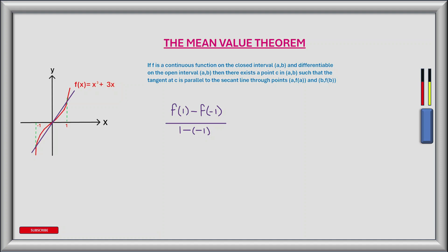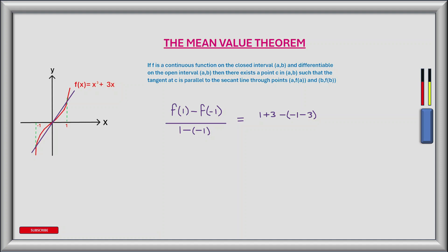So let's first find the average rate of change — that's the gradient of the secant line between the intervals — which is given by the difference between the end points on the y-axis divided by the difference in the end points on the x-axis. If we put 1 into the function we get 1 plus 3, then we subtract what we get when we put minus 1 into the function, which gives minus 3 minus 3, and we divide by 1 minus minus 1. This evaluates to 4 plus 4 divided by 1 plus 1, which is 8 divided by 2, which is 4.